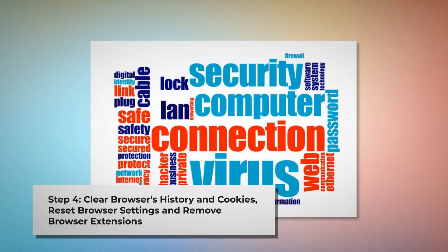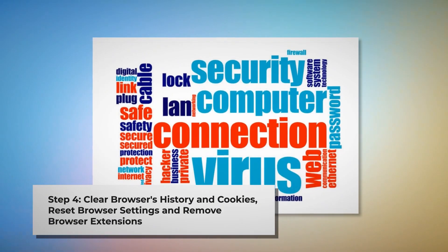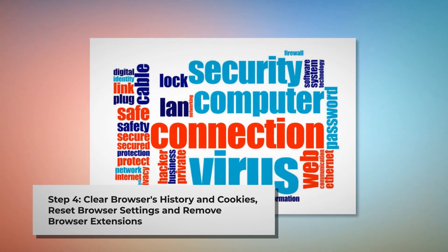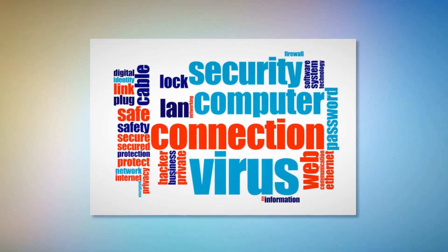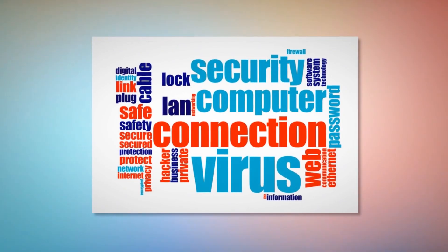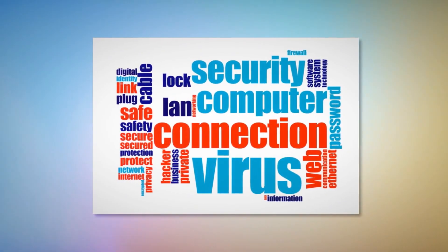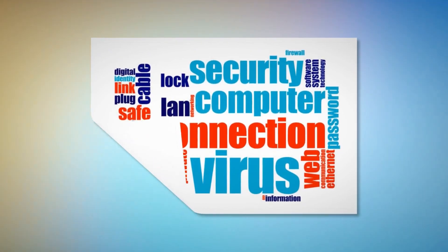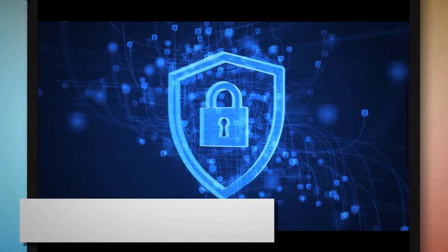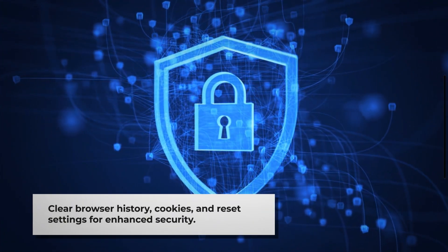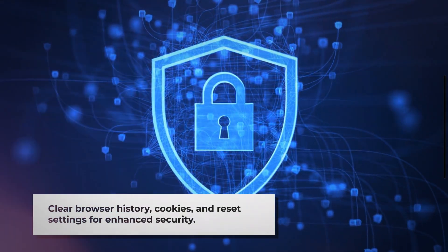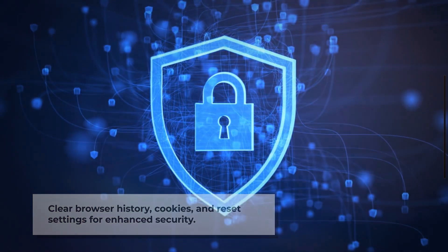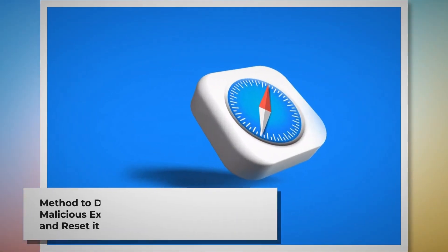Step four: clear browser history and cookies, reset browser settings, and remove or disable unknown browser extensions to be safe from adware. Once you delete the harmful files mentioned in step three, you should delete malicious or unknown extensions from your browsers — Safari, Chrome, Firefox, Opera, and so on — whichever you are or were using. You should also delete browser history and cookies, and reset your browser. Note: before you reset your browser settings, it is always a good idea to back up your bookmarks.